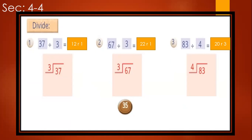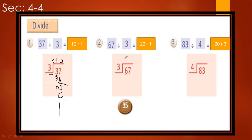Now, dividing two-digit numbers by one-digit numbers with a remainder. For example, divide 37 by 3. 3 divided by 3 equals 1; 1 multiplied by 3 equals 3; subtract: 3 minus 3 equals 0. Bring down the ones: 7 divided by 3 equals 2; 2 multiplied by 3 equals 6; subtract: remainder equals 1. The quotient equals 12 remainder 1.